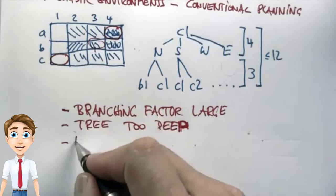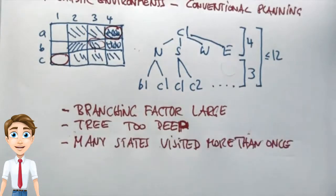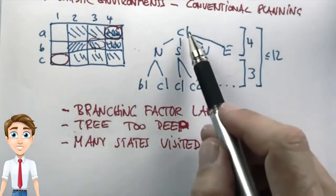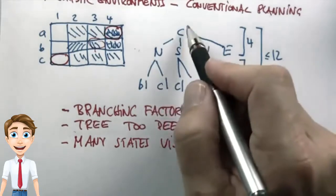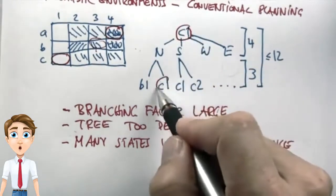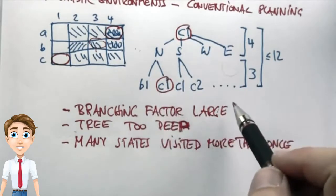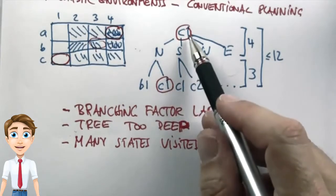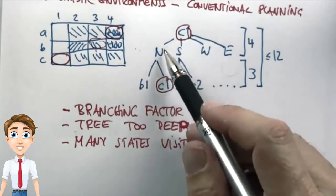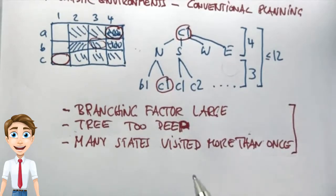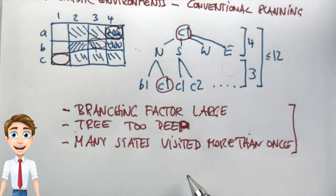The third problem is that many states reoccur in the search. In A*, we were careful to visit each state only once. But here, because actions might carry you back to the same state, you might find that many states in the tree are visited many, many different times. It doesn't really matter how you got to a state, yet the tree doesn't understand this and may expand states more than once. These are the three problems overcome by our policy method, which motivates why calculating policies is so much better than using conventional planning in stochastic environments.